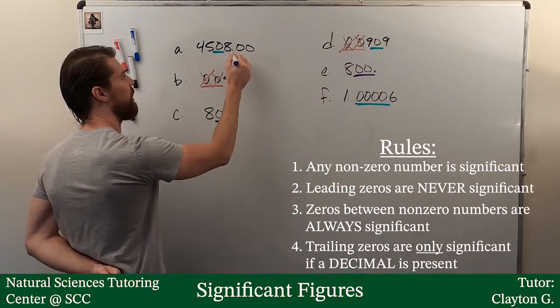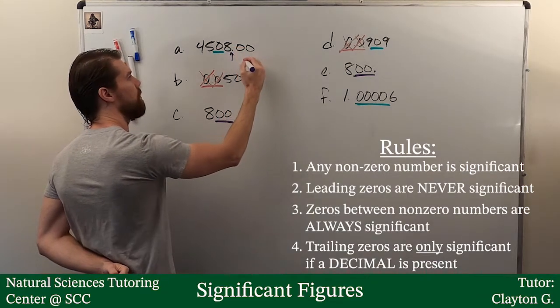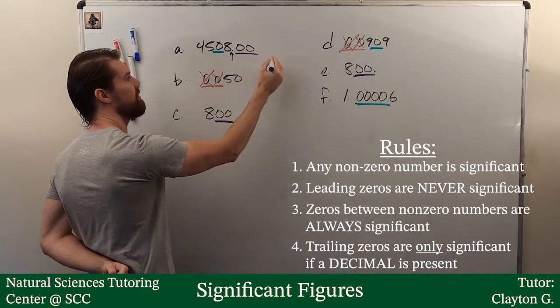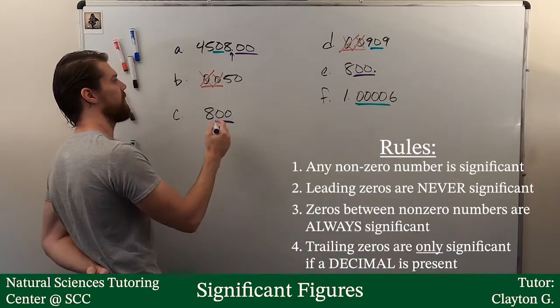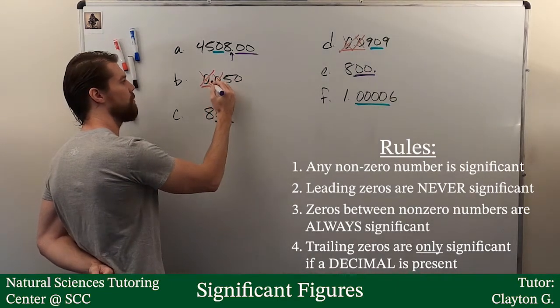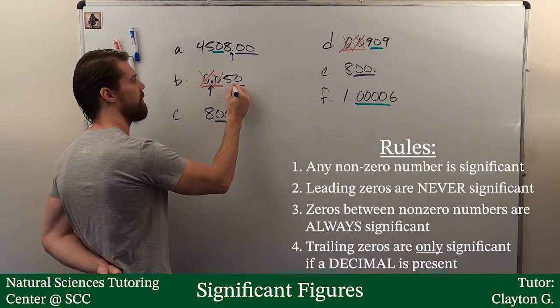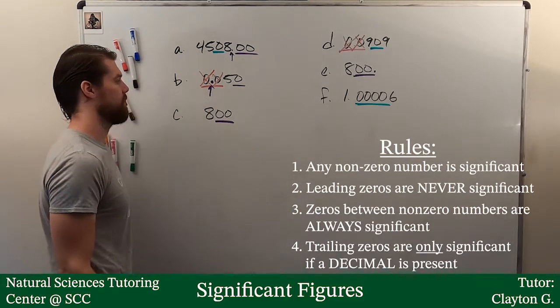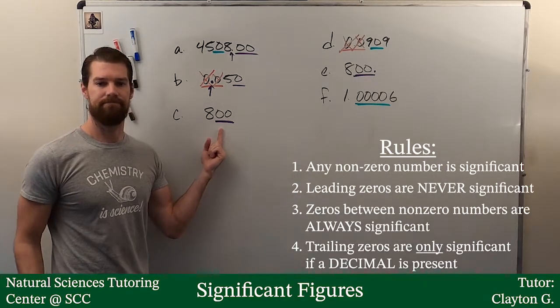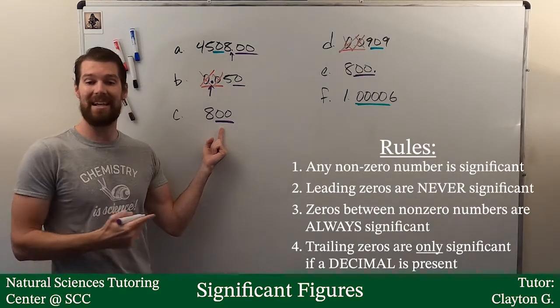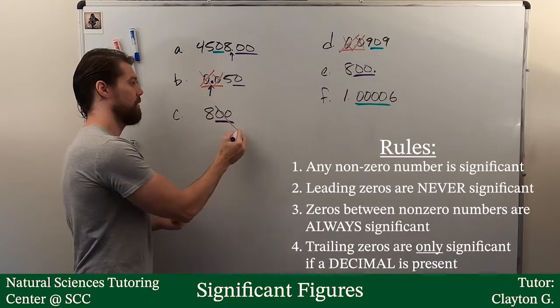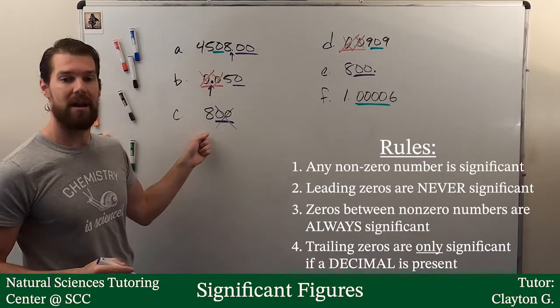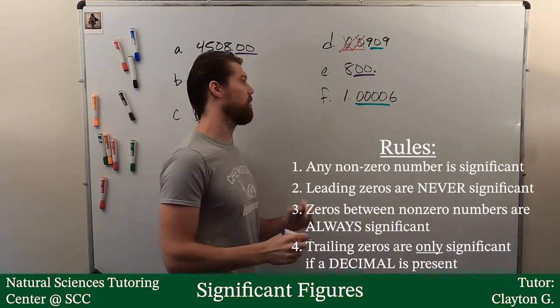Trailing zeros are only significant if there is a decimal. So, for instance, right here, there's a decimal. Therefore, these two zeros are significant. I have a decimal right there. This trailing zero is significant. Check out this 800. No decimal. These are not significant. There's no decimal involved. They're not significant as trailing zeros.